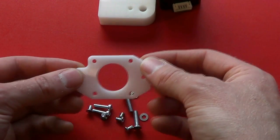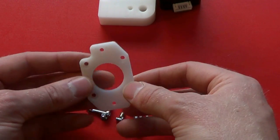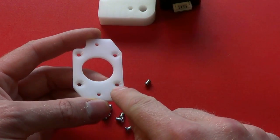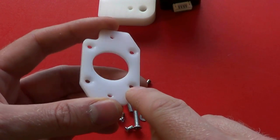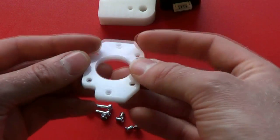This is the X motor support plate and you'll notice that the four motor mounting holes are countersunk. These go to the underside.